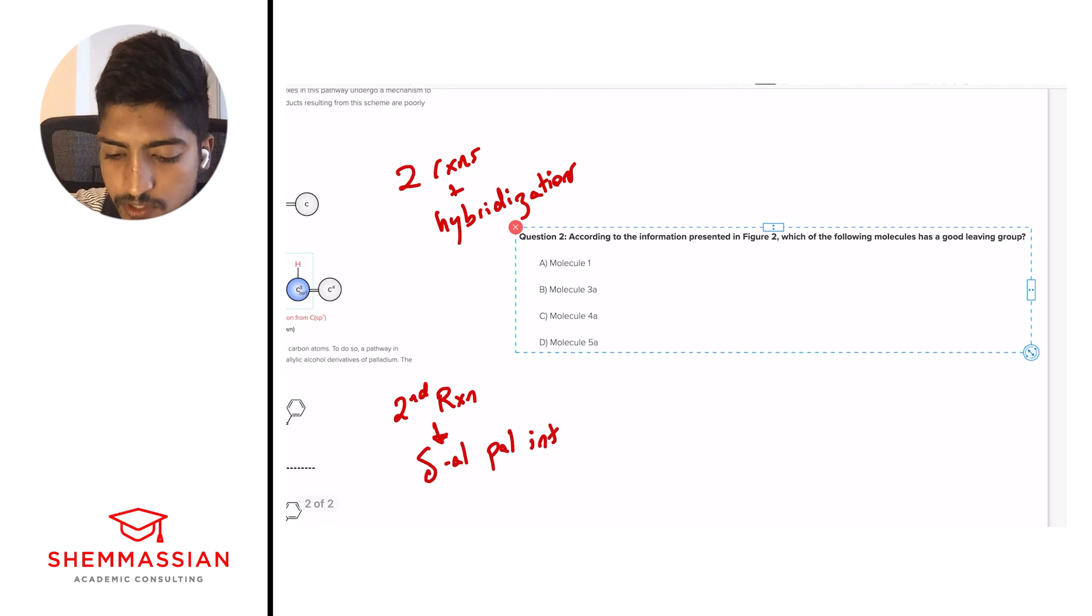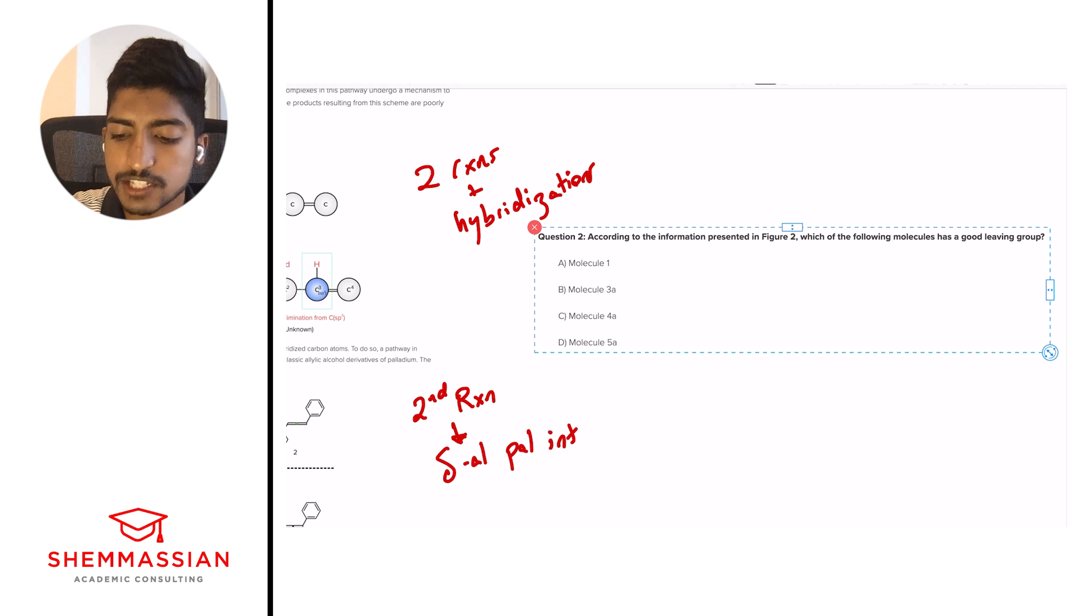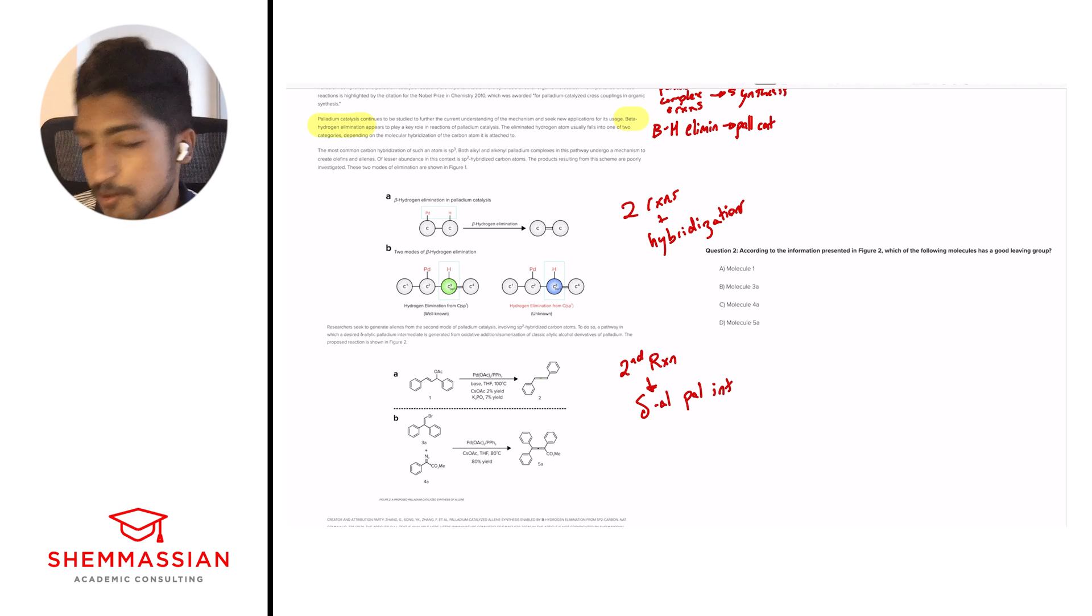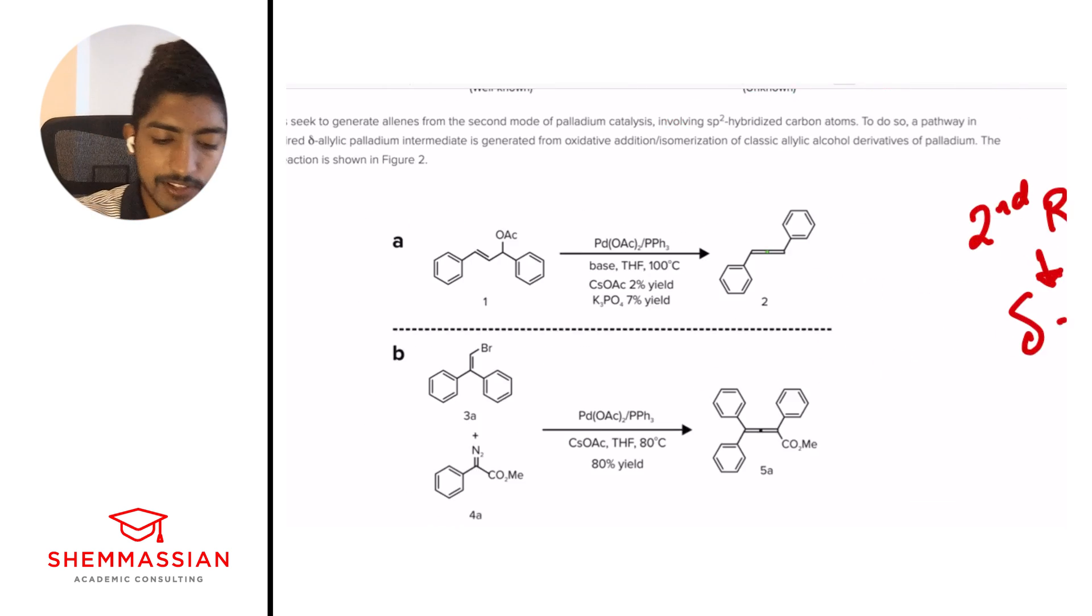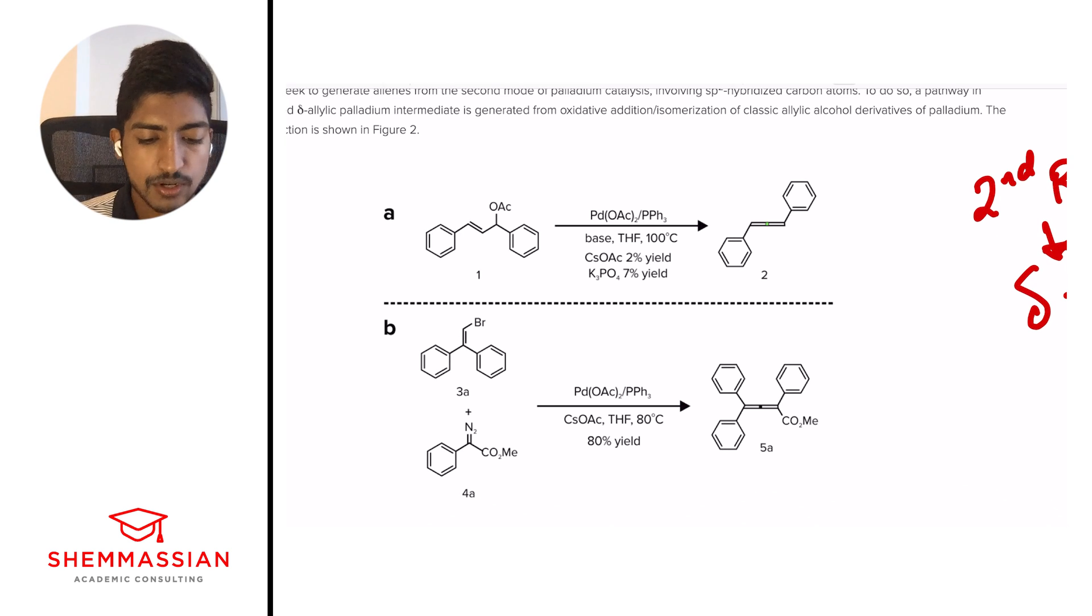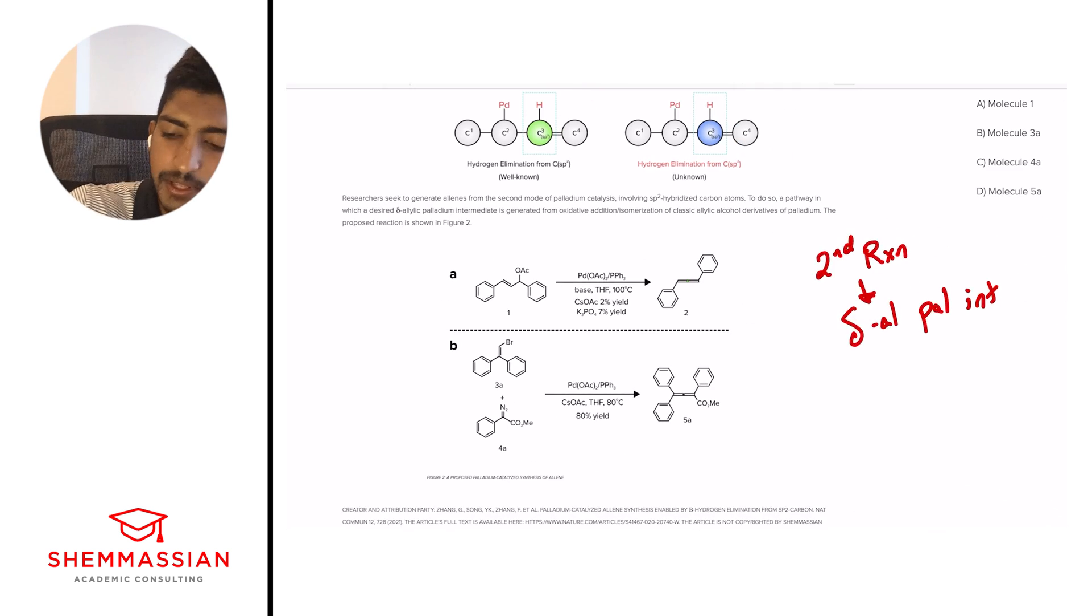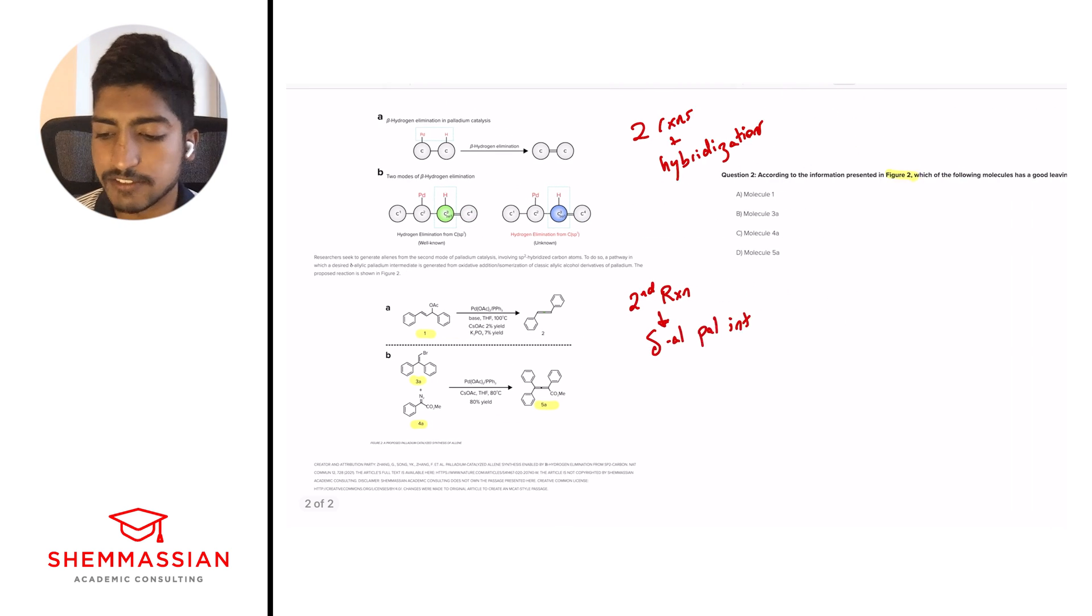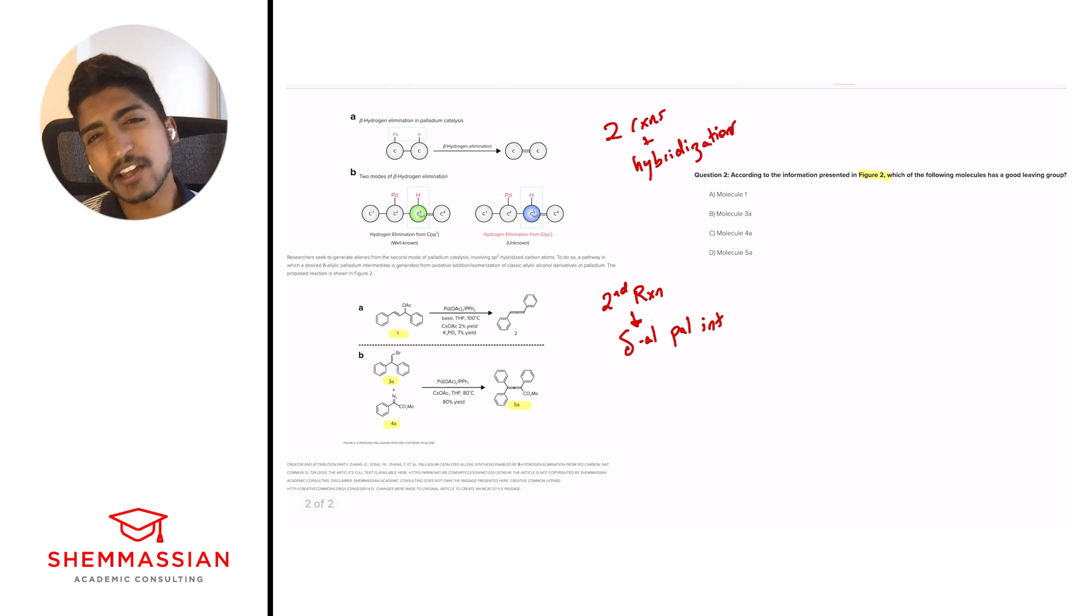So question two. According to information presented in figure two, which of the following molecules has a good leaving? All right. So in every way, it says figure two. And so we can highlight that if we want. But figure two means we have to look at figure two. So it's one of these sort of compounds. And the answer choices are molecule one, molecule three A, molecule four A, or molecule five A. So I'll highlight them here. One, three A, four A, or five A. Great.